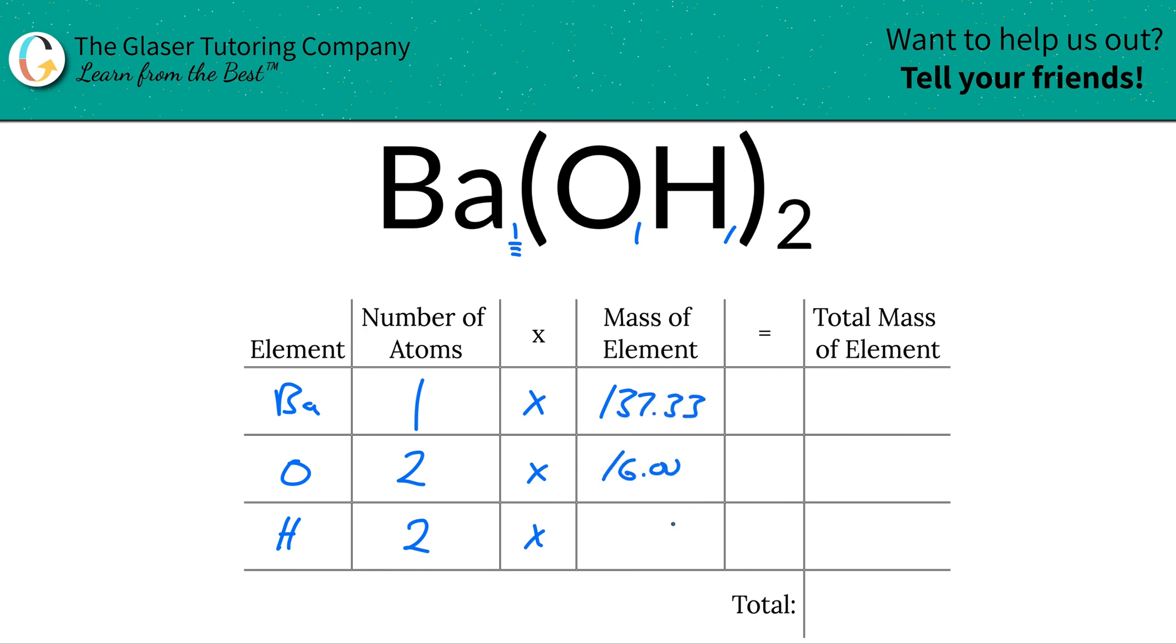So let's write that in. So 137.33 for barium. Oxygen was about 16, and then hydrogen is about 1.01. Now all we need to do is then multiply the rows to find the total mass of the element in the compound.